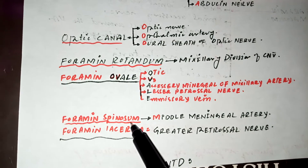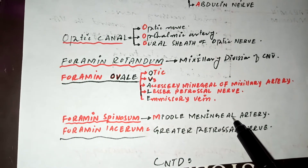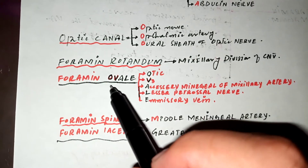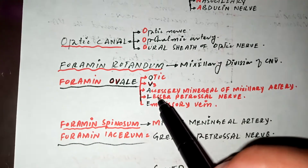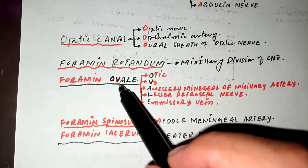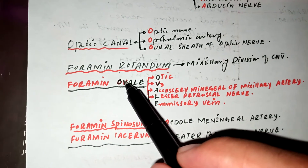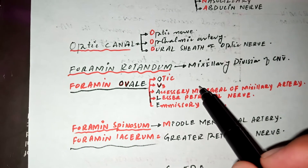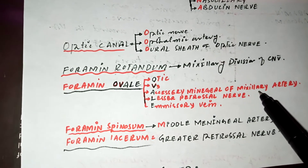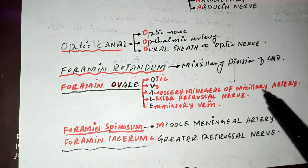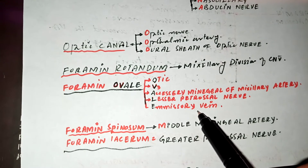The foramen spinosum has 'M' at the end of the word 'spinosum,' so M stands for the middle meningeal artery. The next foramina is the foramen ovale; the structures passing through it can be derived from the word OVALE: O for the otic ganglion, V for V3 of the trigeminal nerve, A for the accessory meningeal branch of maxillary artery, L for the lesser petrosal nerve, and E for the emissary vein.